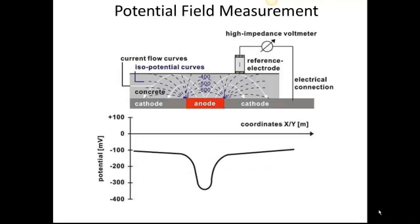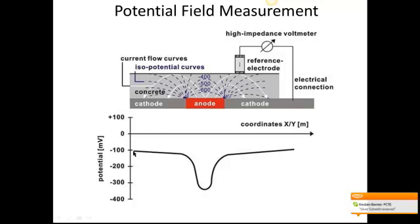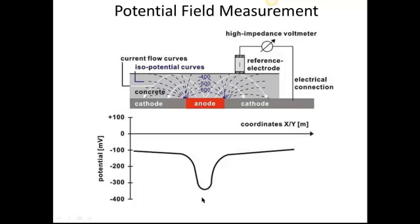Potential field measurement — this is half-cell potential measurement. As I talked about previously, the reference electrode is applied to the surface of the concrete and the voltage is measured. The more negative the voltage, the more likely corrosion is. As you can see, the voltage induced by the current flow at the anode is progressively lower the closer you come to the anodic site. Looking at the graph, we see where corrosion activity is occurring — we have a negative minus 300 to minus 400 value, whereas where it's passive, it's around minus 100.